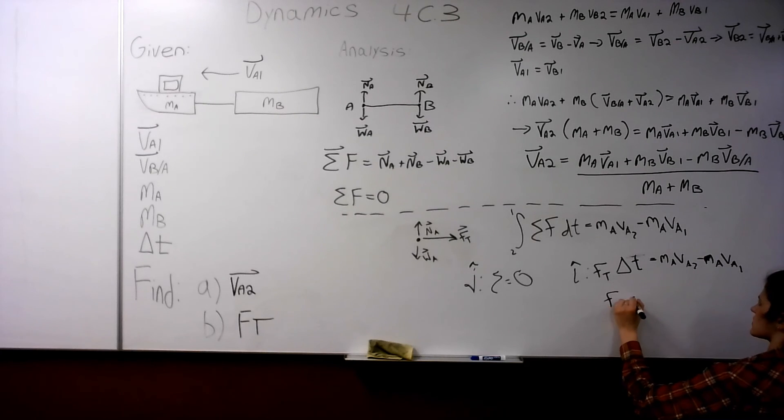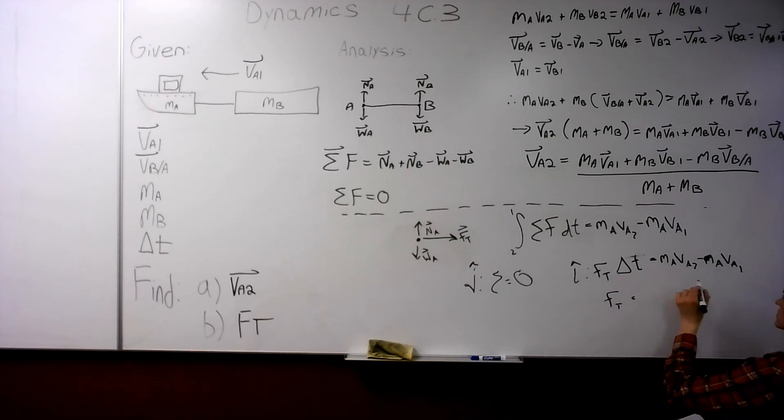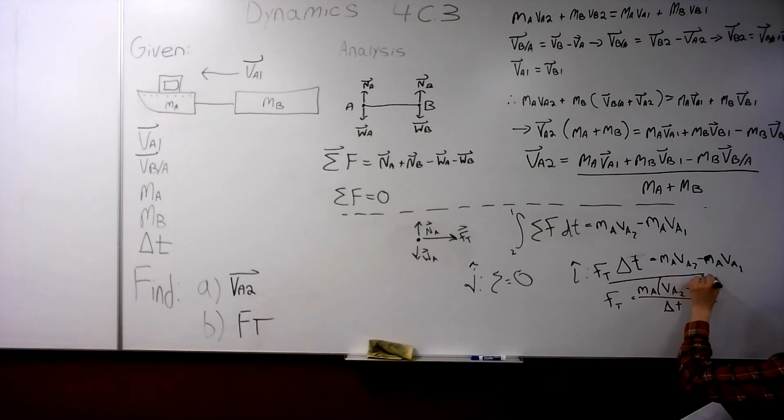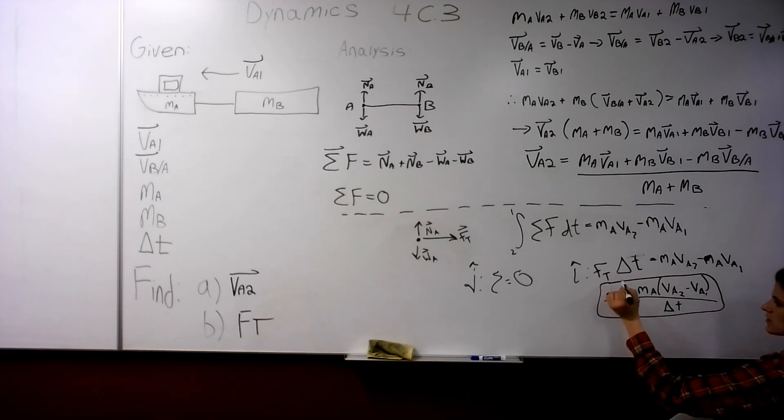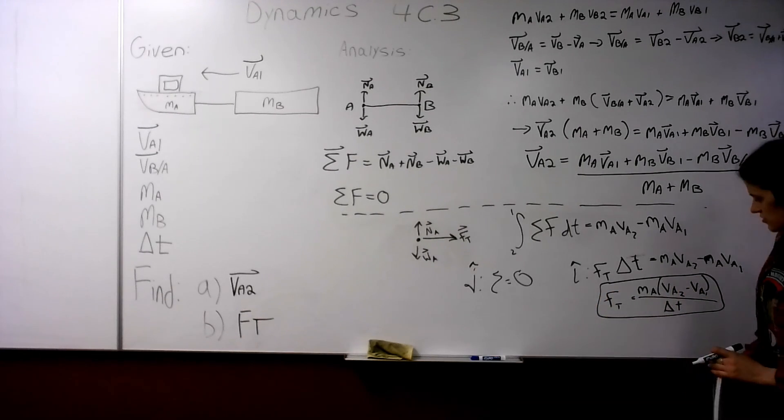And then we can solve algebraically for the tension force here. So Ft equals mass of A, VA2, minus VA1, all over delta t. And that is the solution for the tension force.